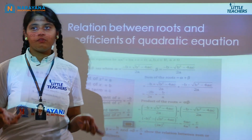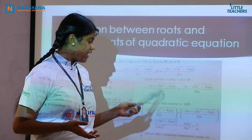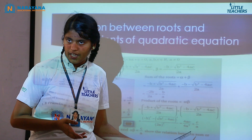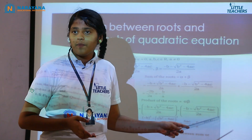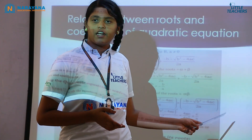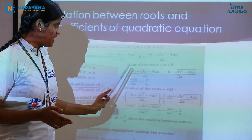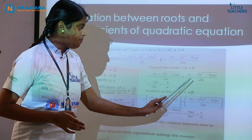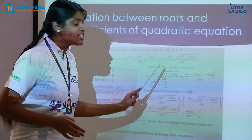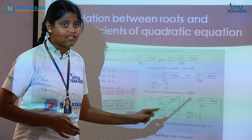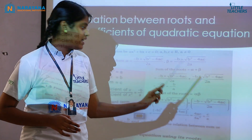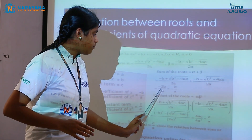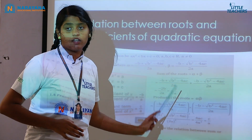Sum of the roots is alpha + beta: (−B + √(B² − 4ac)) / 2a + (−B − √(B² − 4ac)) / 2a. The LCM is 2a. So we get −B − B = −2B in the numerator, and the √(B² − 4ac) terms cancel. So we get −2B / 2a, the 2s cancel, and we are left with −B/A. So the sum of the roots is −B/A.